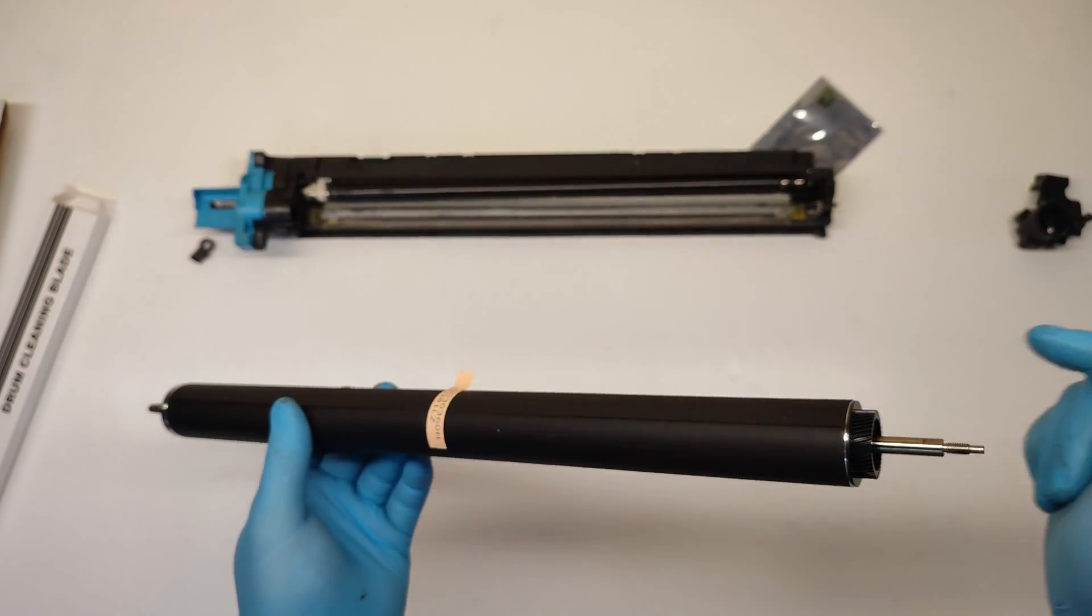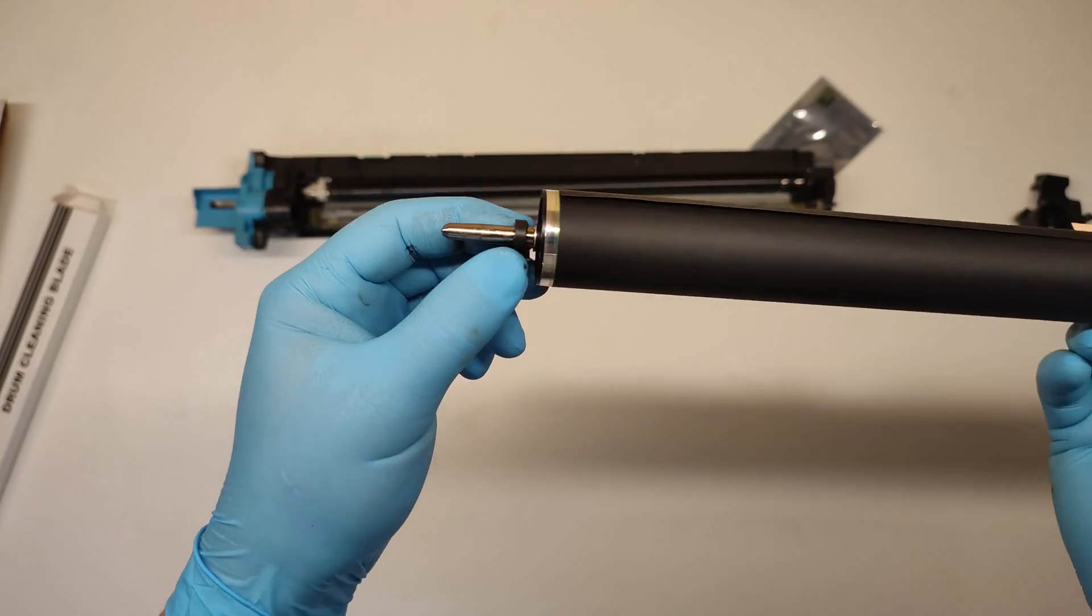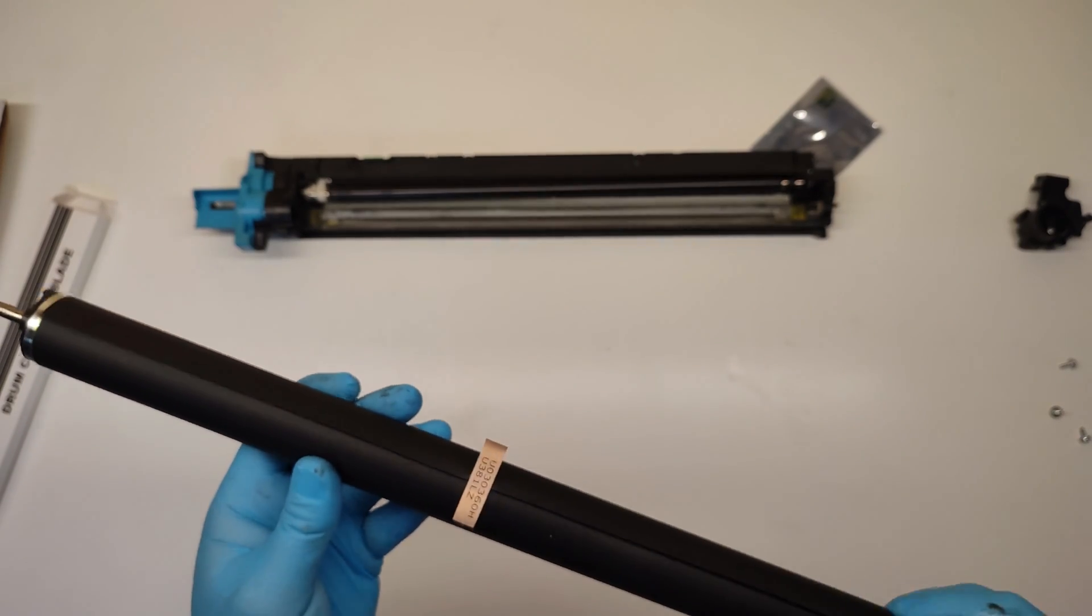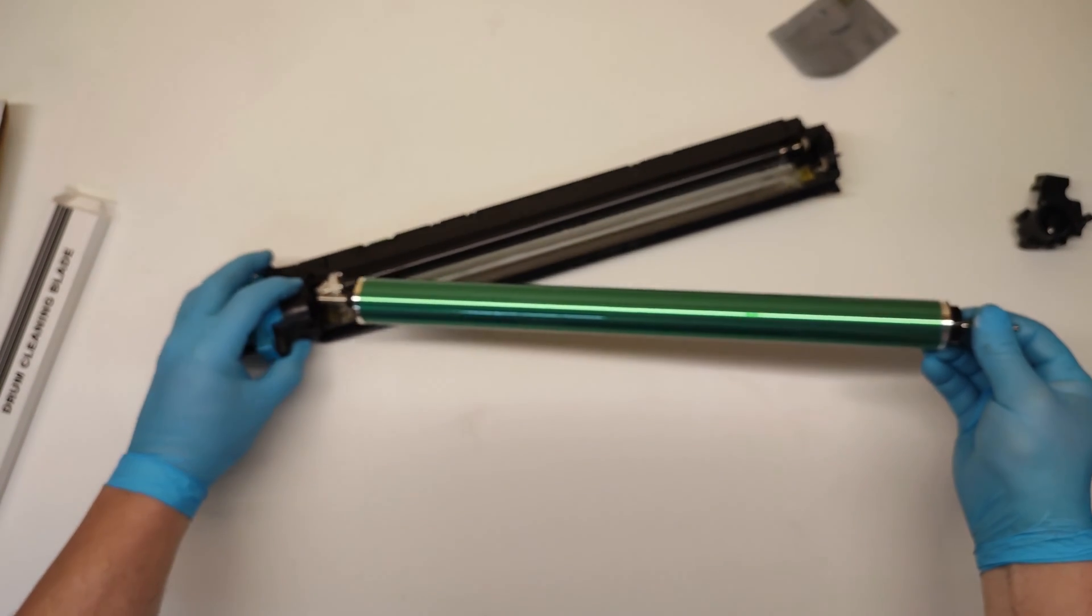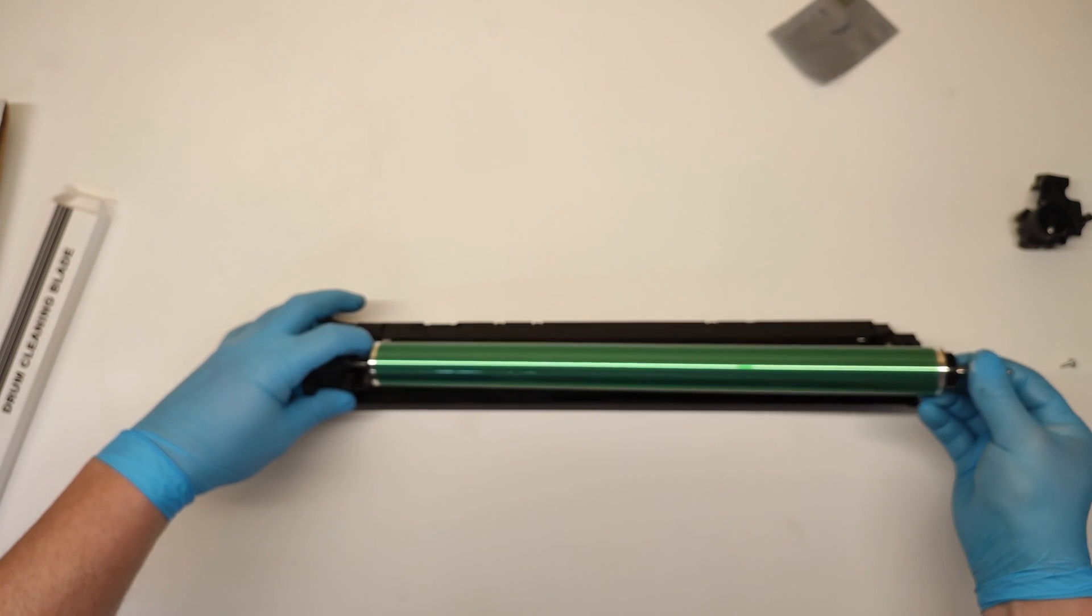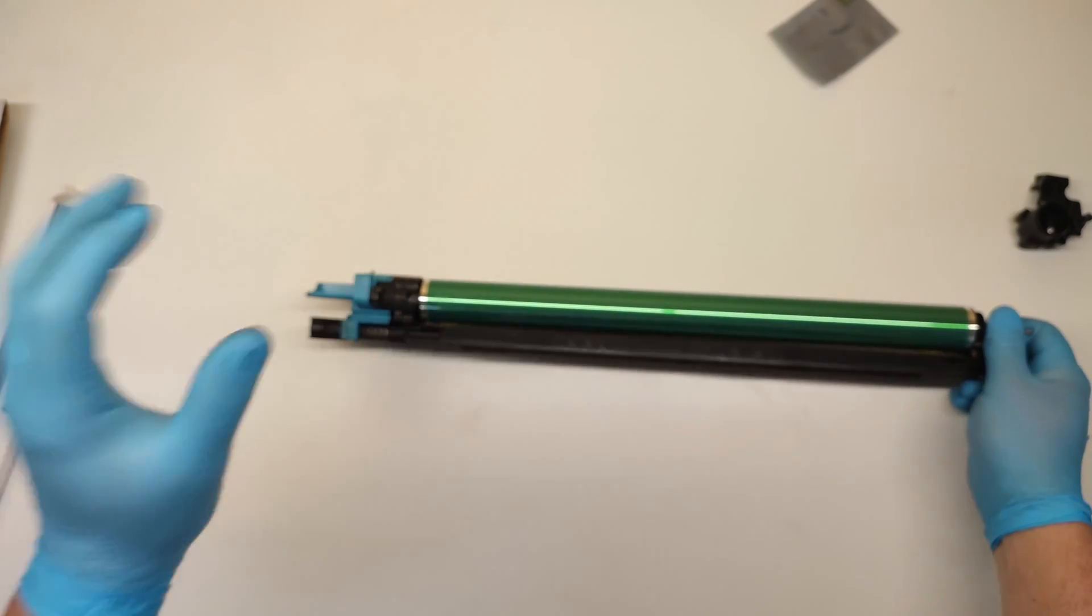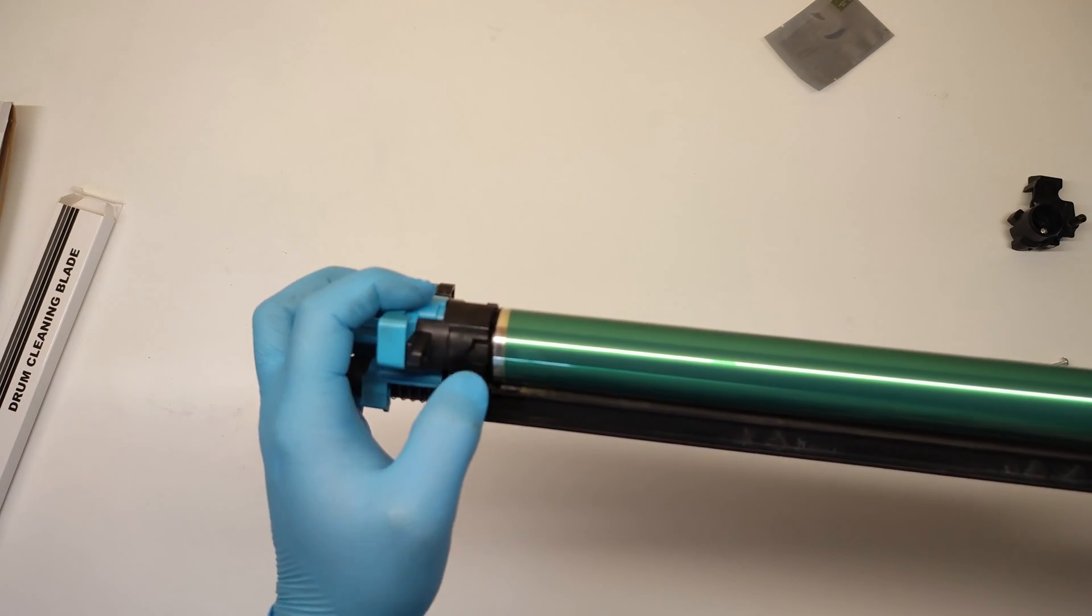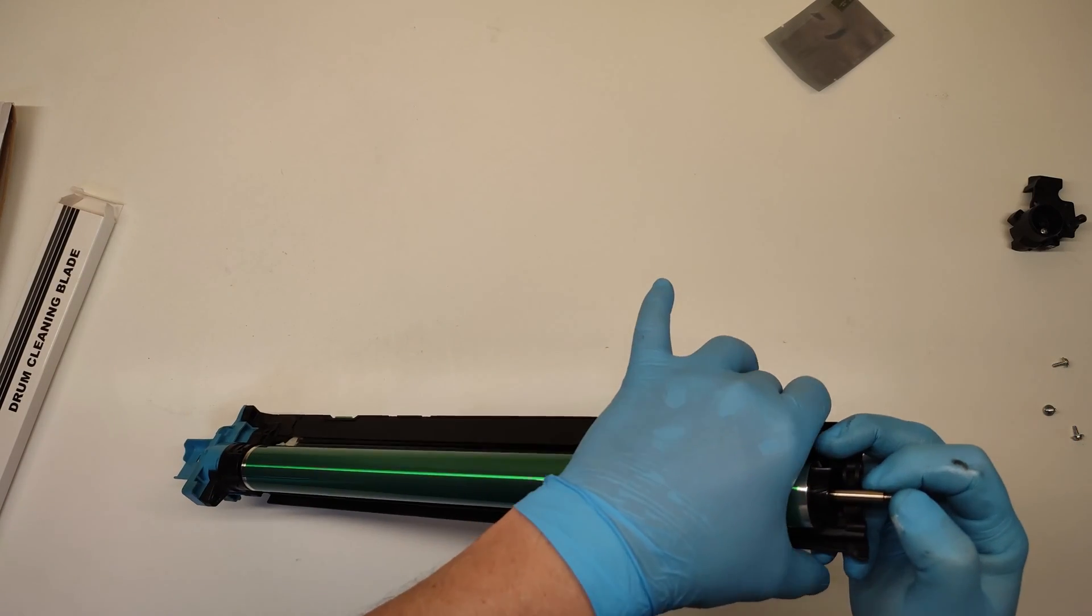And now we are ready to put everything back. Remove the black cover of the drum, slide it to the left. Be careful this part has to fit in the hole here and from the other side.